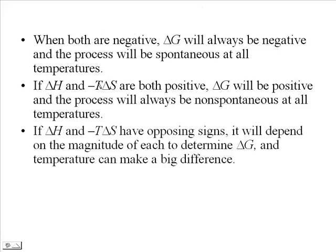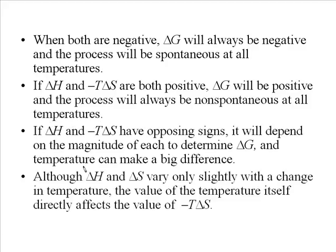When you have opposing signs, it depends on the magnitude of each term and the temperature to determine whether the reaction is spontaneous or non-spontaneous, and temperature can play a big factor. Delta H and delta S do change a little bit with temperature, but not enough to make a significant difference — the change in the temperature value itself, going from 298 K to 250 K for example, has a much bigger effect.